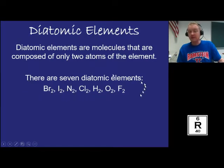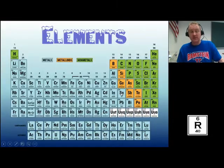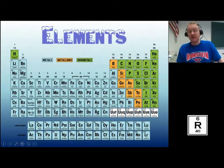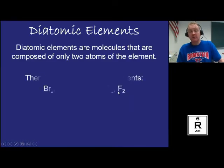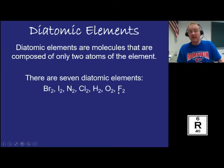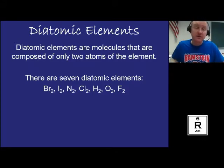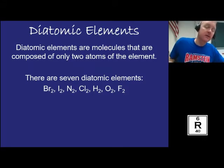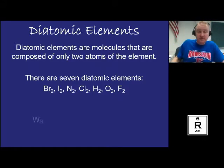These are the only diatomic elements — there are 7 of them out of all the elements on the periodic table. All the rest are not diatomic. You have to know these 7 elements. There are some tricks to help you remember them, so I'm going to share some ways to memorize your 7 diatomic elements.